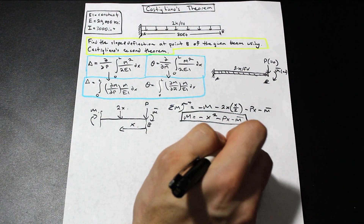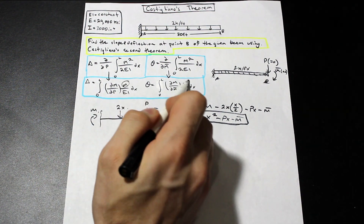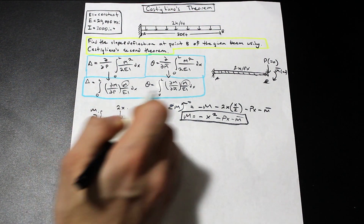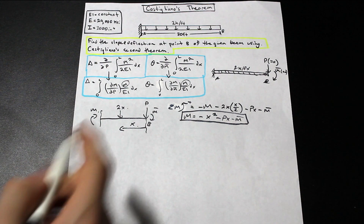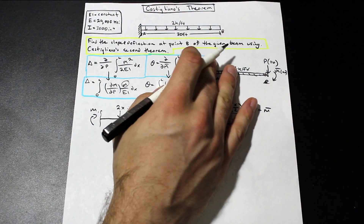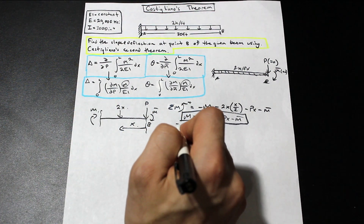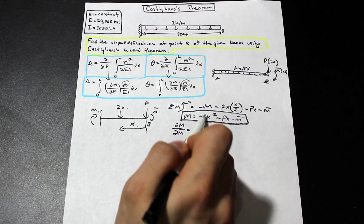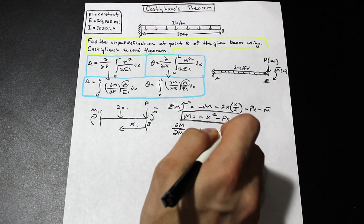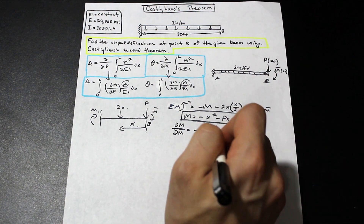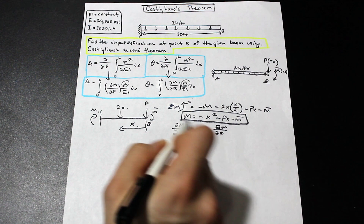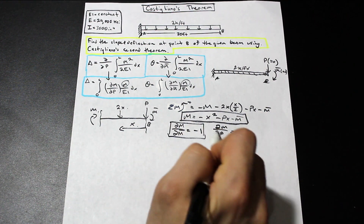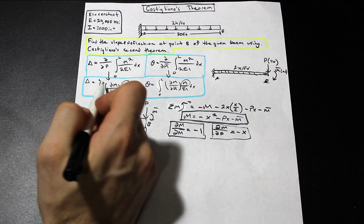The only thing that changes between slope and deflection is the partial derivative. Taking ∂M/∂M̄, since −M̄ is the only term containing M̄ and it is linear, that gives simply −1. Taking ∂M/∂P, treating X as a constant, that reduces to −X. So we have our two partial derivatives and our M expression, and we're ready to solve for both deflection and slope. We won't draw a table here — when it's this simple, just plug directly into the formulas.